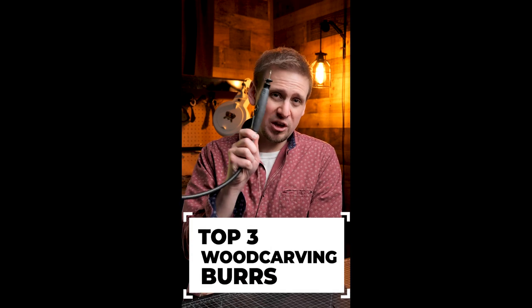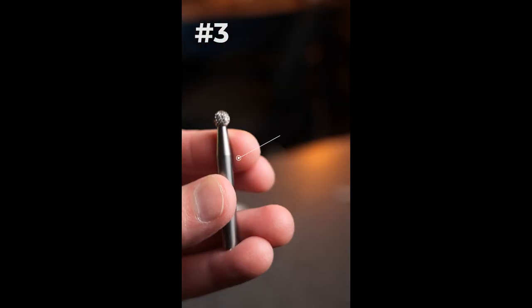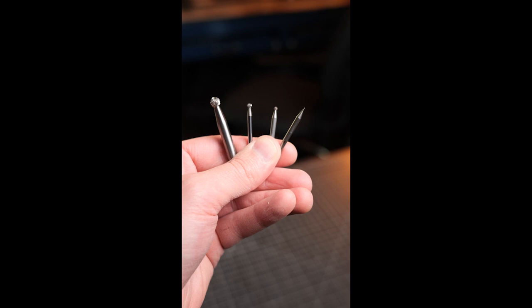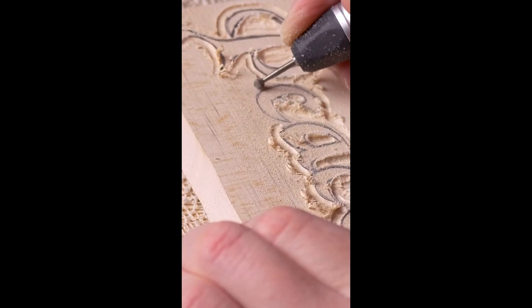My top three burrs to use with a Dremel or any rotary tool. Number three, the Round Carbide Burr. This comes in many different sizes and is great for going around corners or for general use.